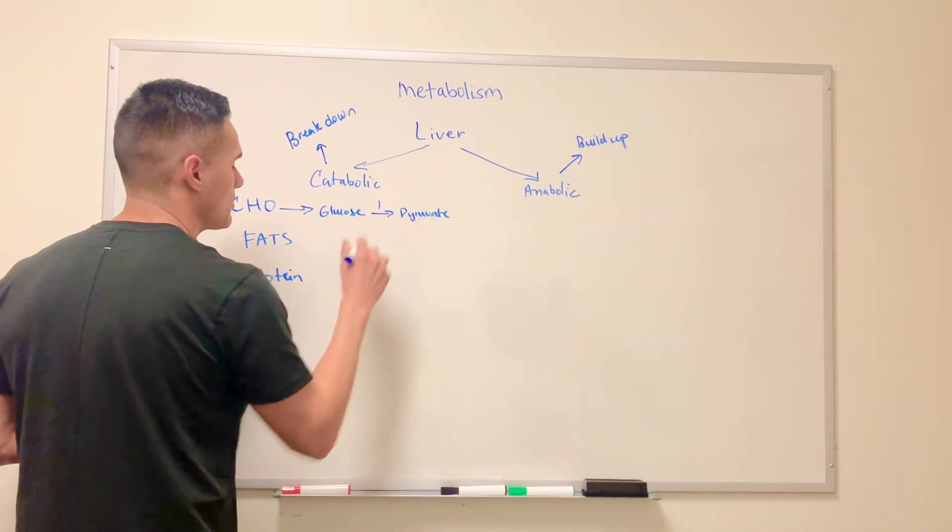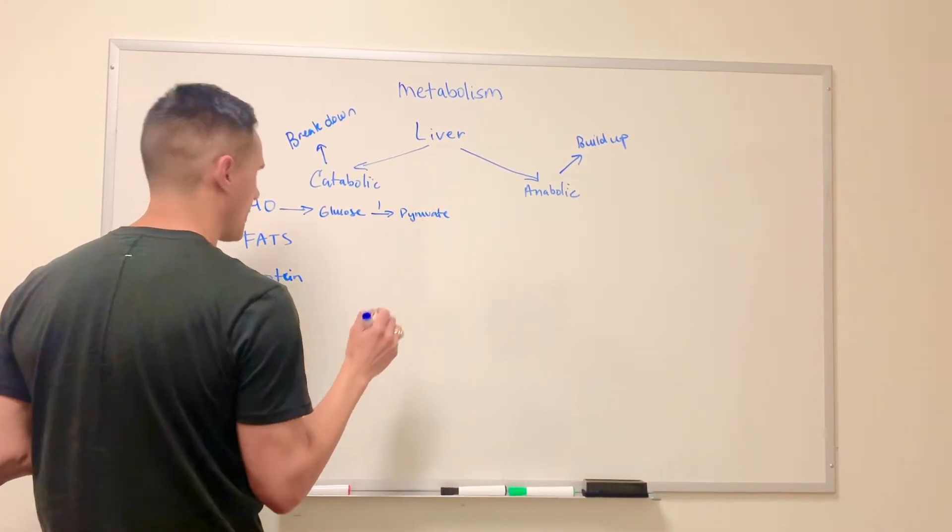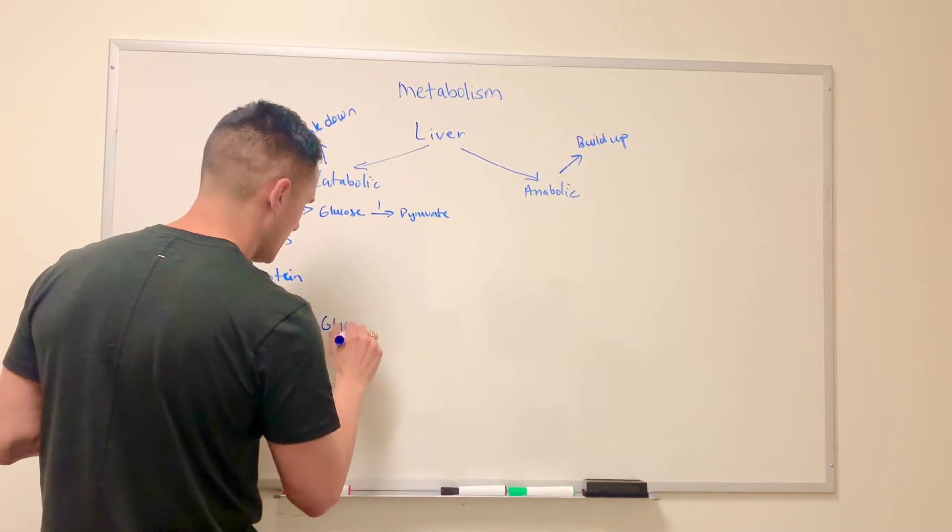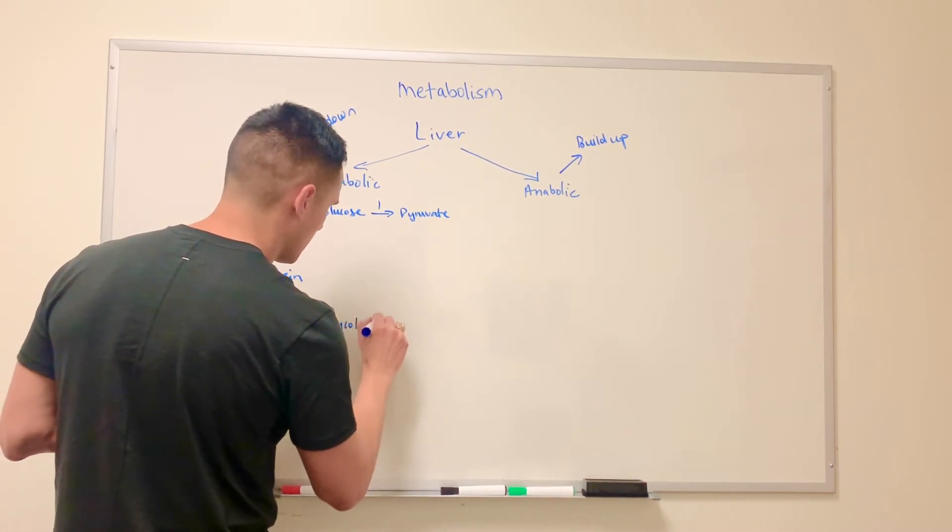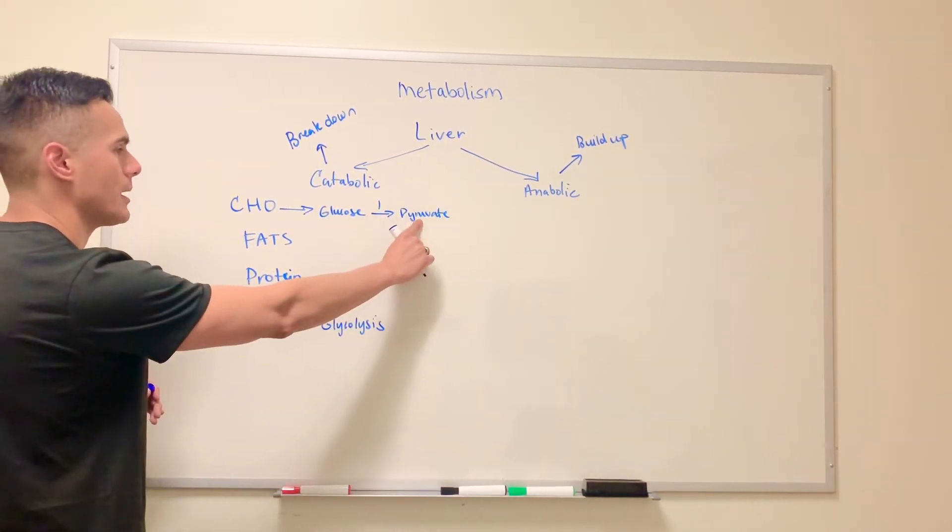And this reaction, this is a series of reactions that occur in order to produce pyruvate. But what this is known as is glycolysis. So we're lysing glucose and producing pyruvate.